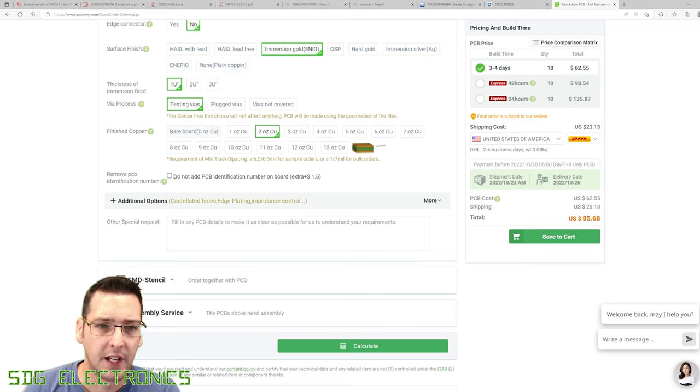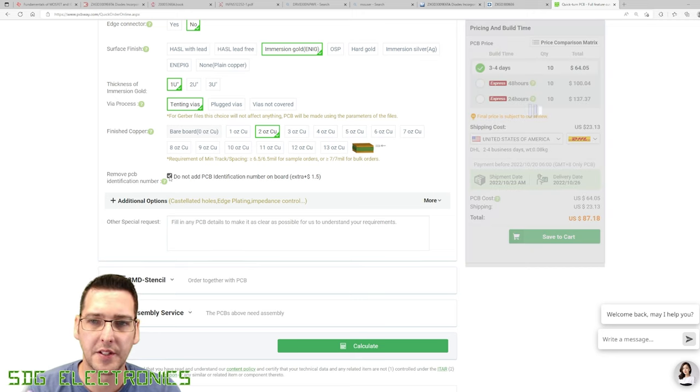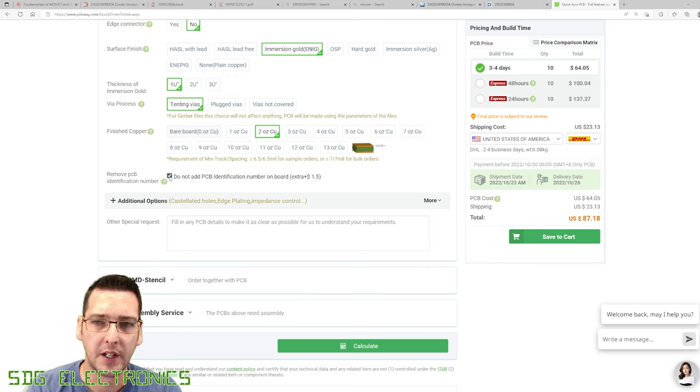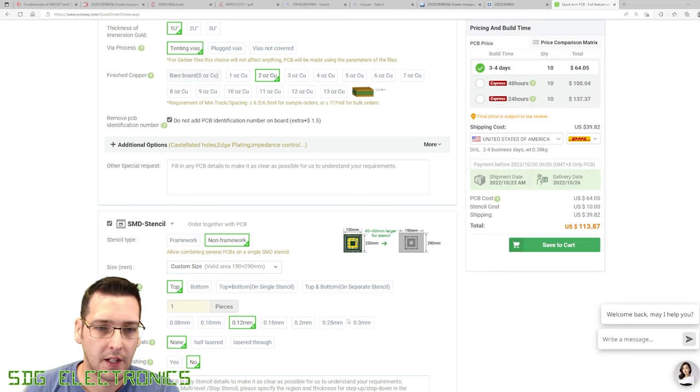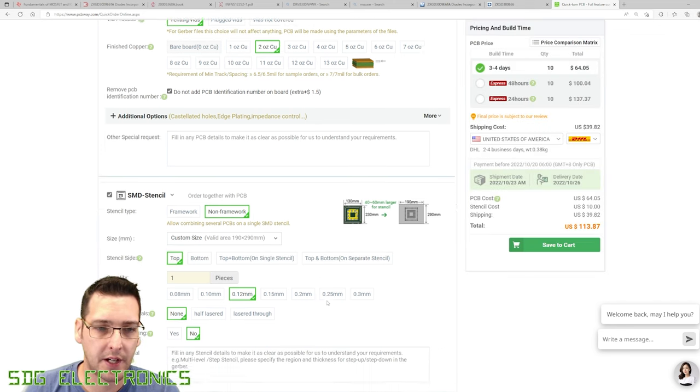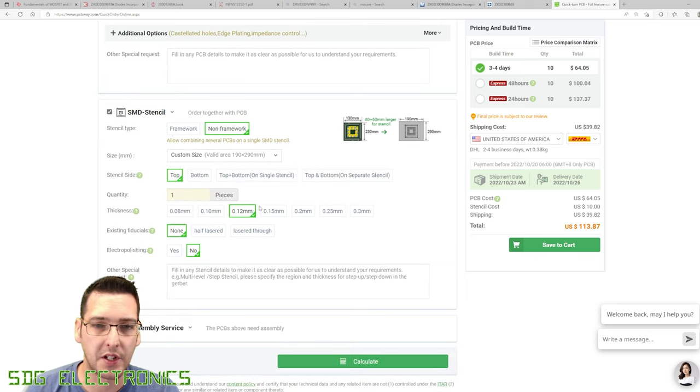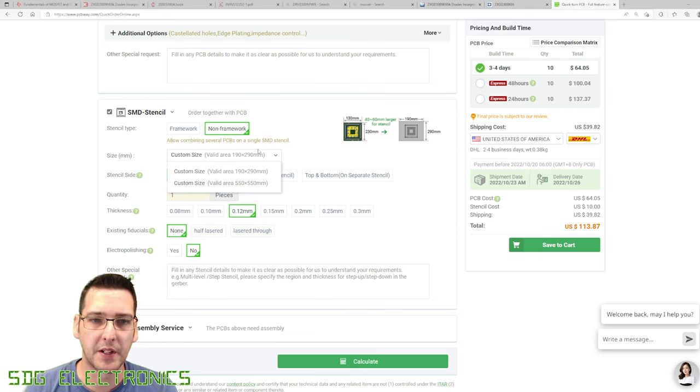And one thing that I like to do is also remove the ID because when these boards are panelized, they have a little ID number, I'd rather remove that. And I think it's $1.50 extra. And then we'll do the SMD stencil as well. Since this is all or pretty much all surface mount parts, it makes sense to get the stencil made. And we want the stencil on the top side. Thickness 0.12 is fine. We haven't got any particularly high density components.